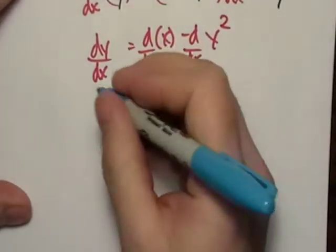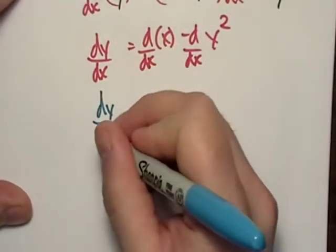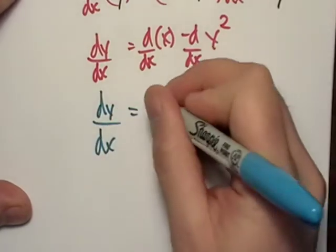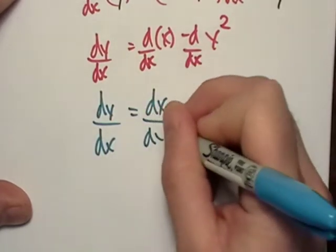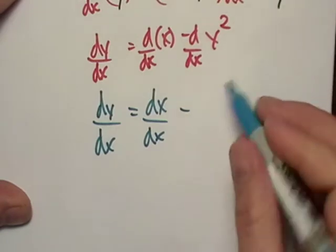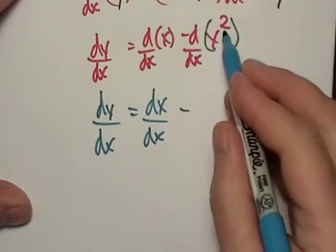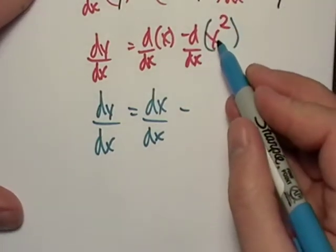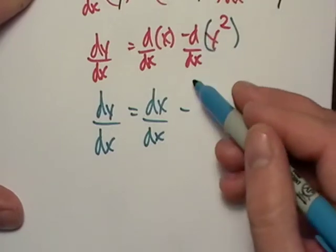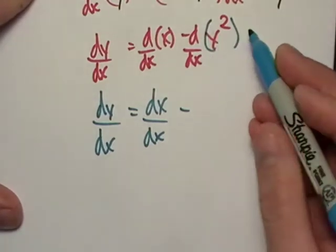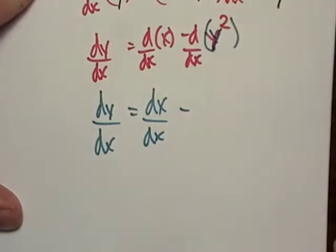And let's simplify this a little bit. So we have dy/dx being equal to dx/dx minus, we're going to take the derivative. See, here we are again. We need the derivative with respect to x, but I don't have an x in here. I just have a y.